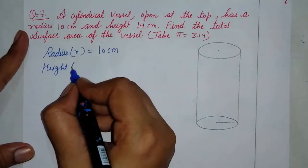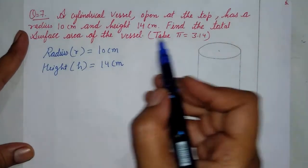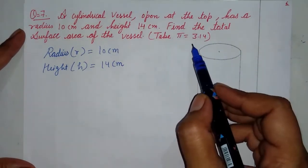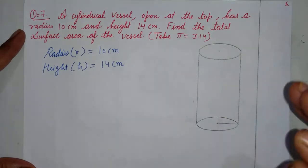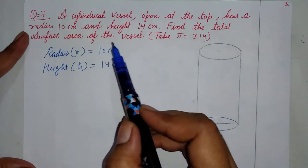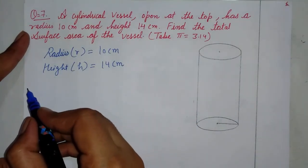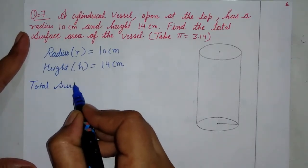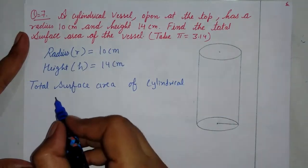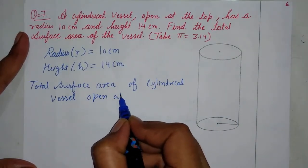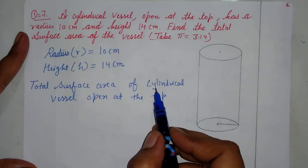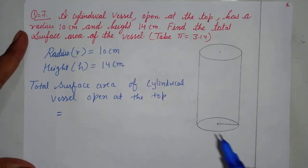Radius is 10 cm and height is 14 cm. Find the total surface area of the vessel. Take pi equal to 3.14. Now this question is different because the value of pi equals 3.14 — not 22/7 — so the answer will be different. Now I will find the total surface area. The formula is 2πr(r + h), but I have special mention that this is a cylindrical vessel open at the top, so we adjust the formula.